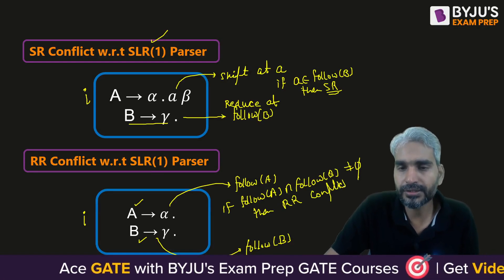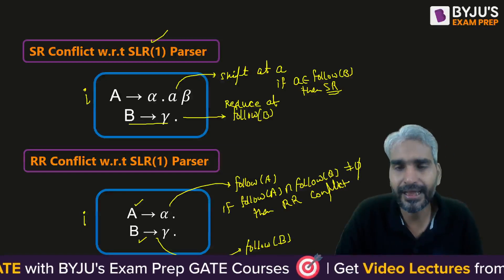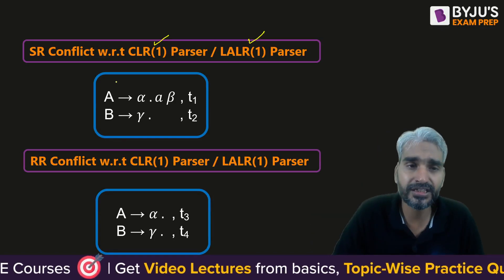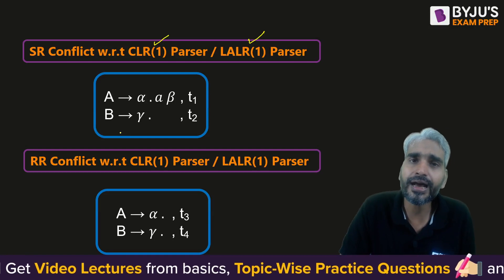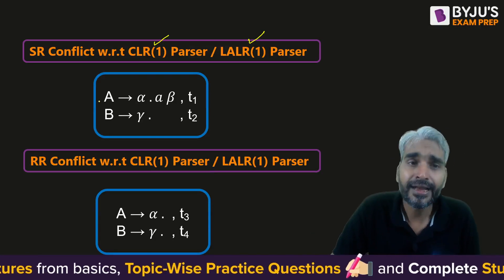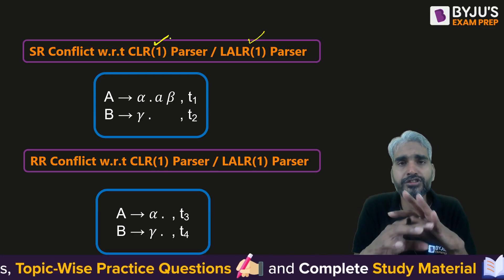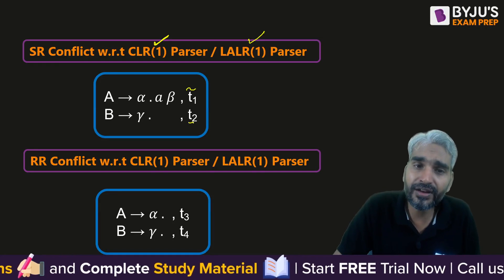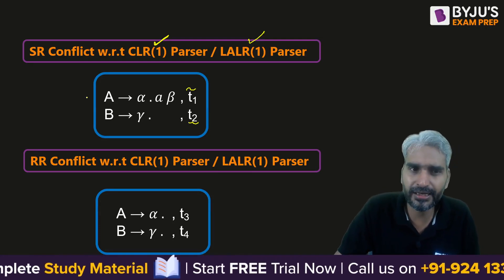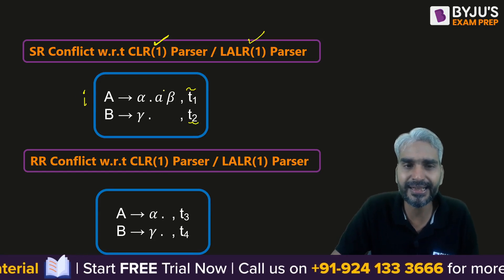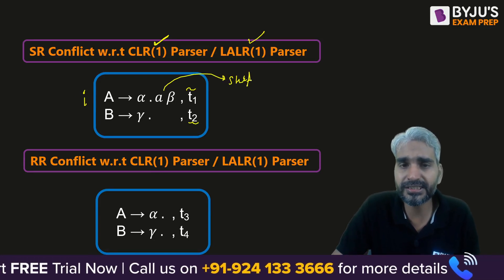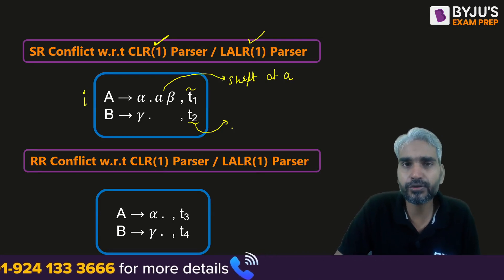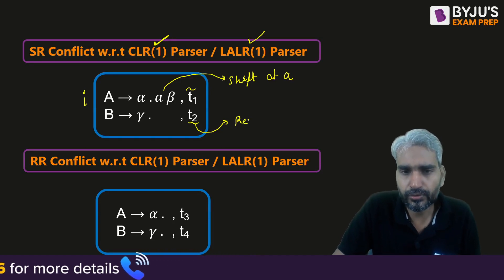For CLR1 and LALR1 the process is the same. The difference is that for LALR1 we check for conflicts after merging states with the same core set, while for CLR1 we check without merging states. Now the lookahead set T1 has an impact only on reduced productions. The shift will still be at terminal a, but reduce entries are placed only for terminals in set T2.